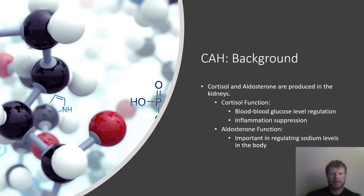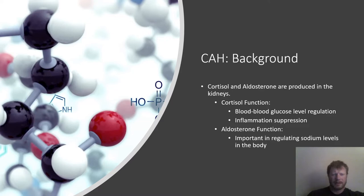Continuing on with the background: cortisol's main function is blood glucose level regulation and inflammation suppression. It's a hormone important for stress management, so it will be elevated when you're stressed. Aldosterone's main function is regulating sodium levels in the body. This covers the basic things that are going to be affecting the disease state of somebody with congenital adrenal hyperplasia.